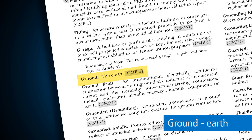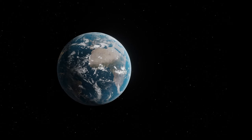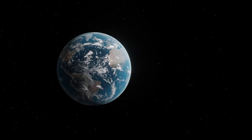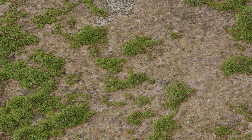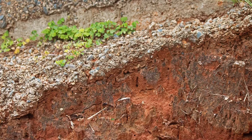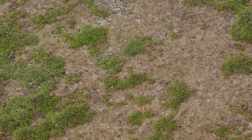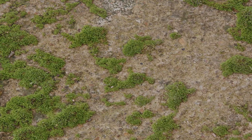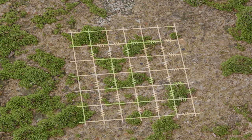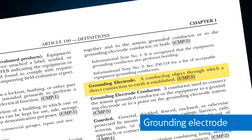The National Electrical Code tells us that ground is the earth — I think it's the shortest definition in the NEC. We define ground as the earth, so anywhere you use the word 'ground' you're thinking of tying to or connecting to the earth. Because the earth does not come with terminals, we have to establish a connection to earth, and we do that through what we call the grounding electrode.